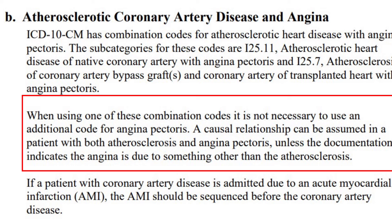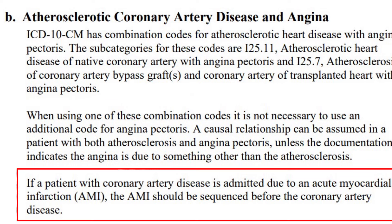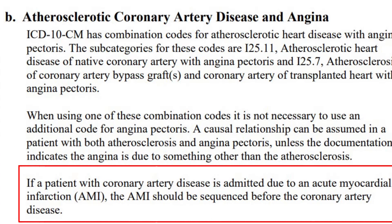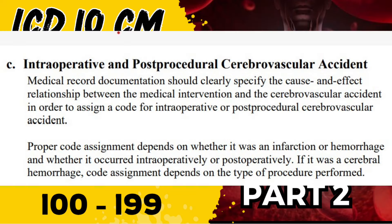If a patient with coronary artery disease is admitted due to an acute myocardial infarction (AMI), the AMI should be sequenced before the coronary artery disease. This follows general coding guidelines — the reason for admission is coded first. I'll put the link to my general coding guideline video in the description box below, since understanding general coding guidelines is essential before applying chapter-specific guidelines.